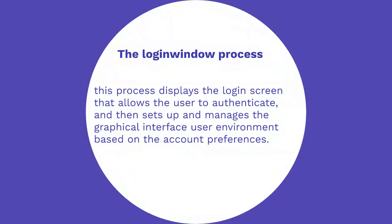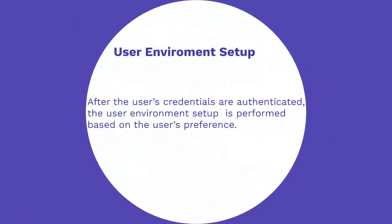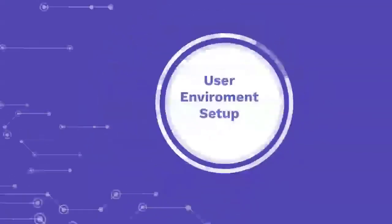The system starter process is used for launching startup items. For system configuration-related information, it refers to /etc/hostconfig. The login window process displays the login screen that allows the user to authenticate and then starts up and manages the graphical user interface environment based on account preferences. After the user's credentials are authenticated, the user environment setup is performed based on the user's preferences.